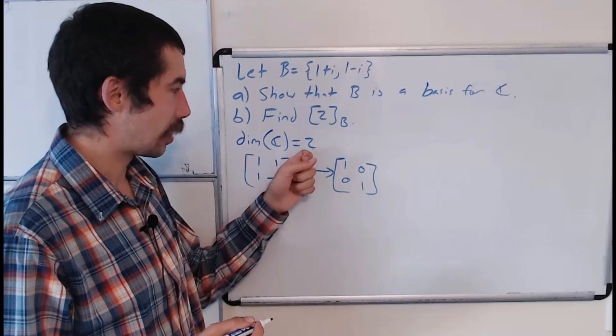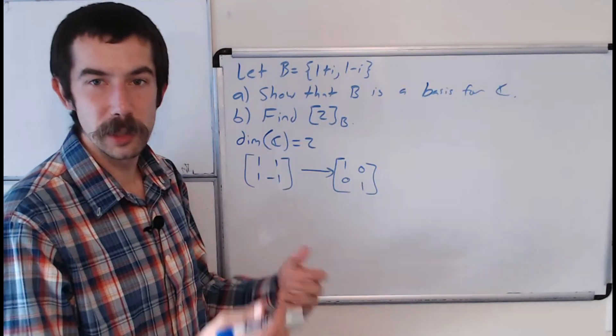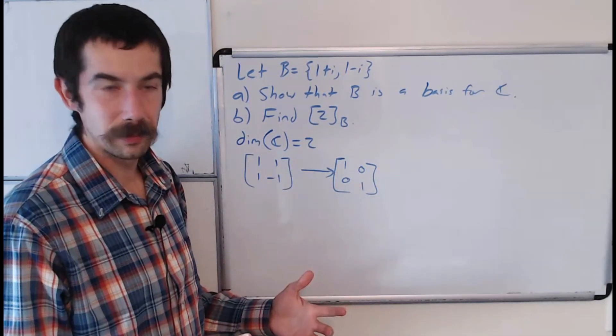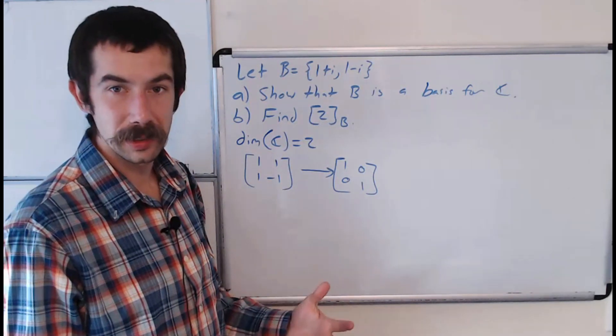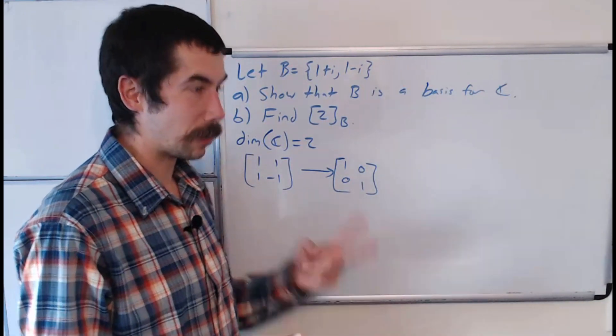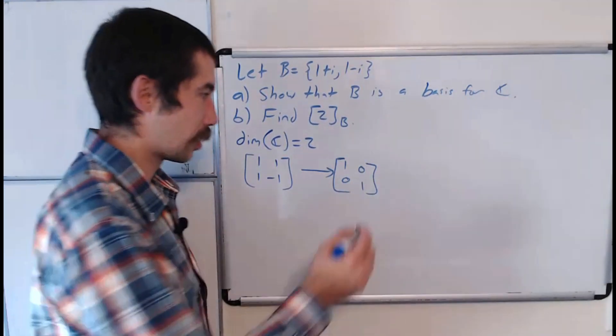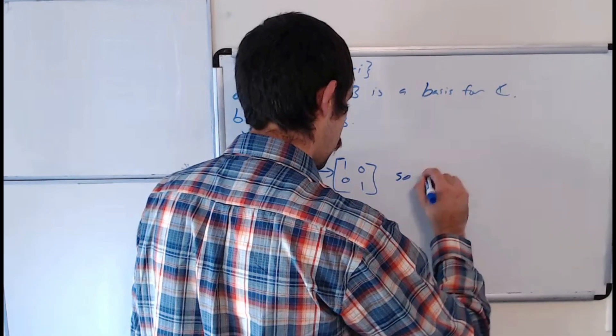So they're linearly independent and there's two of them, so it must be a basis for ℂ. Since the dimension of ℂ is 2, any linearly independent set with two elements is automatically a basis. Okay, so B is a basis.